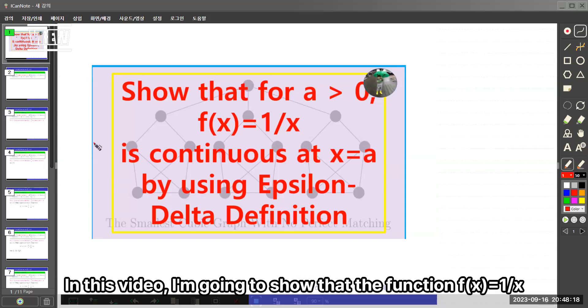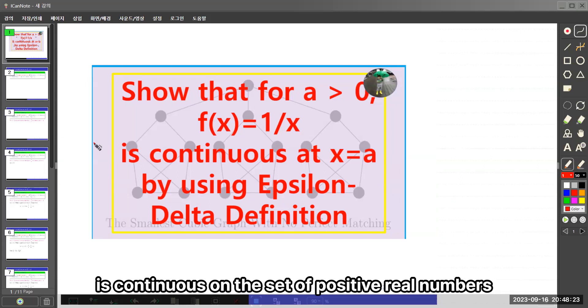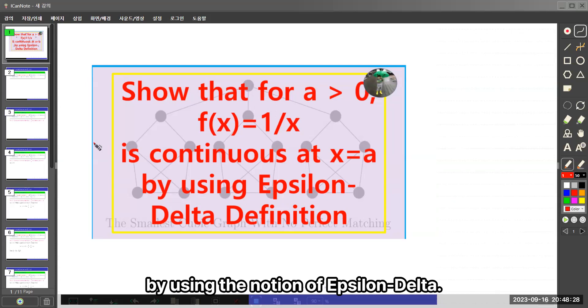In this video, I'm going to show that the function f(x) = 1/x is continuous on the set of positive real numbers by using the notion of epsilon-delta.